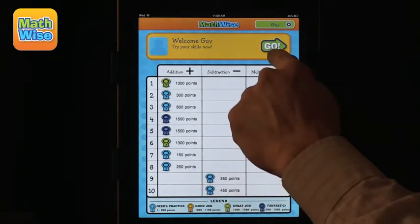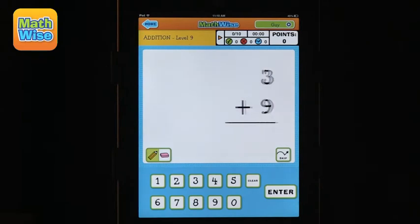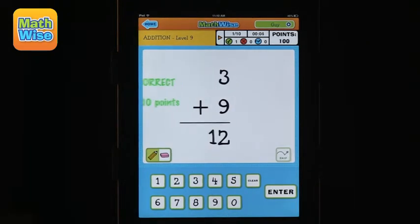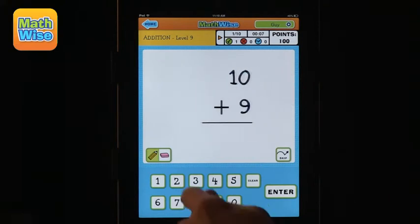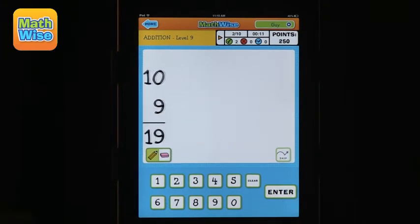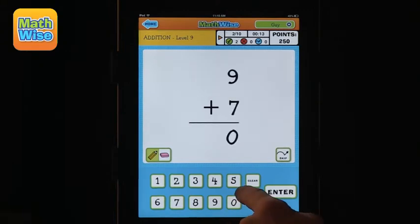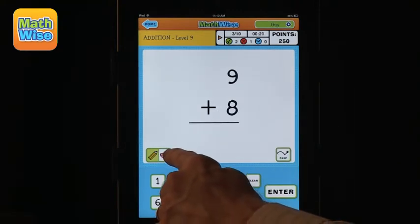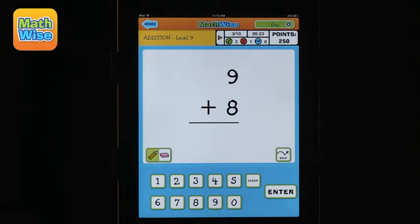And I can also try my skills right now. And this is addition problems and you can see that you simply enter the answer. You get the points based on speed. So if I do this really quickly, I get 150 points. And if I do this wrong, it says incorrect and you don't get the points. And you can skip drills you don't know. And you can also erase answers. So this is called MathWise.